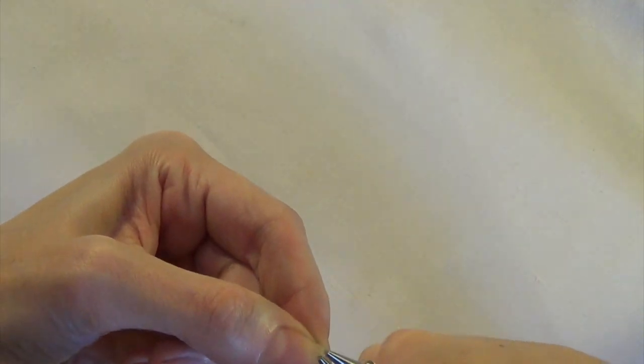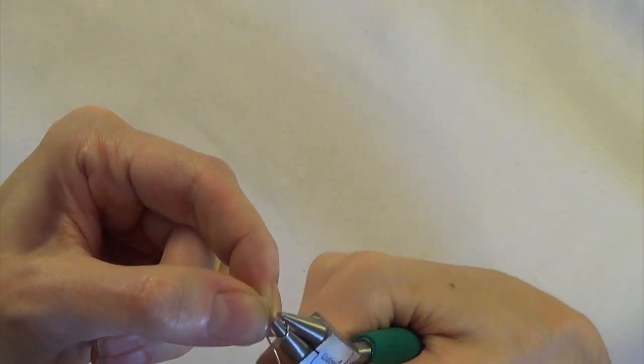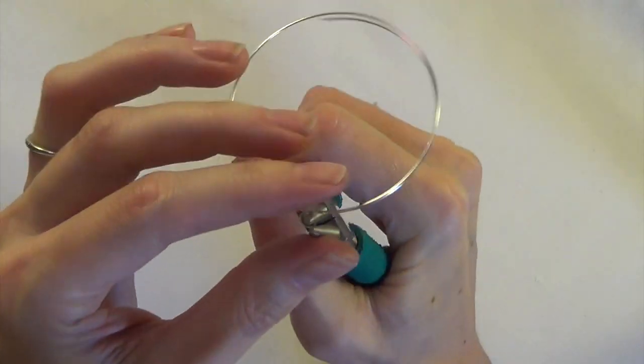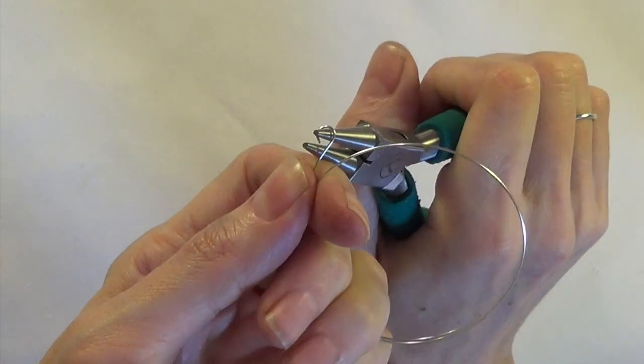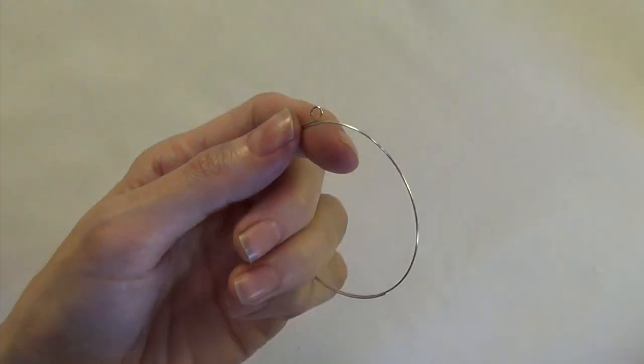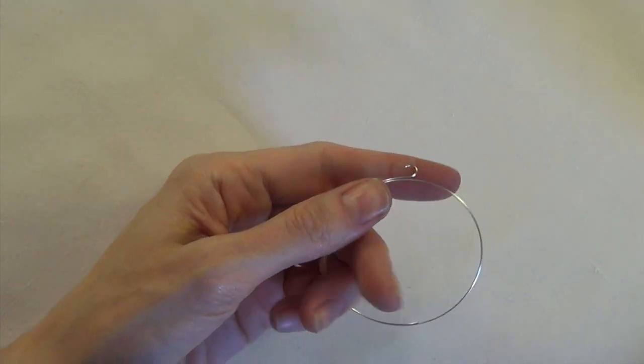Roll that loop around. If you're used to working with silver and other regular jewelry metals this wire is going to seem really hard to work with. So you're going to roll that loop around, make sure it is closed up all the way.